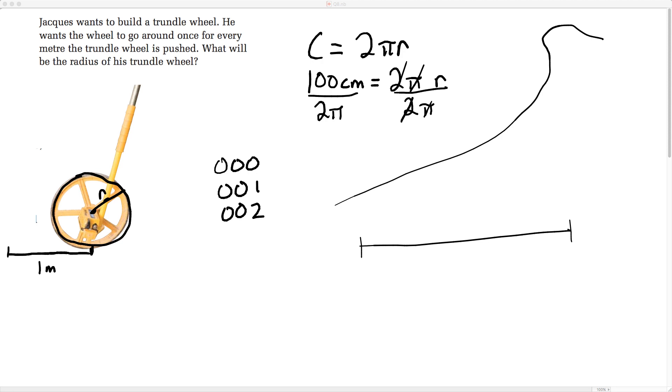And that's 15 point, we'll say 2 decimal places, 15.92 and that's going to be centimeters. So in order for us to measure out one meter along the ground when the wheel rotates through one revolution, the radius of the wheel would have to be 15.92 centimeters.